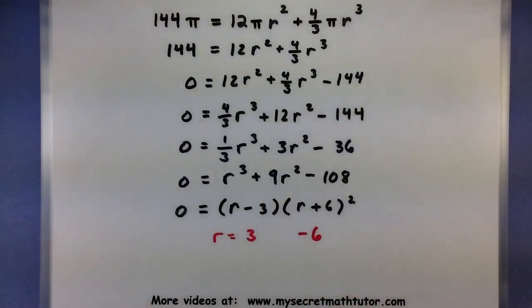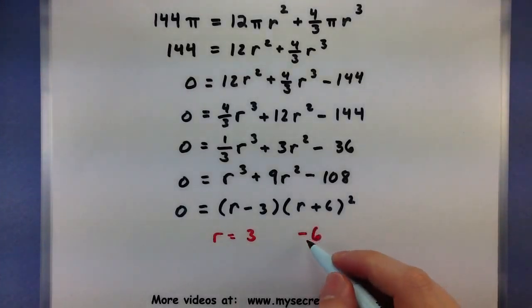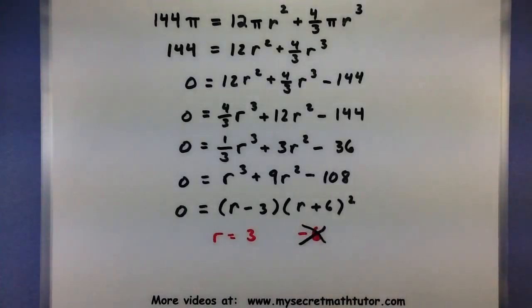So it looks like I have two solutions for my problem. Now since this is in the context of a real-world problem, I want to make sure that makes sense. And so when I'm looking at my radius, there's no way I could have a radius of negative 6. It just doesn't make sense. So we'll get rid of that. It is not a valid solution.